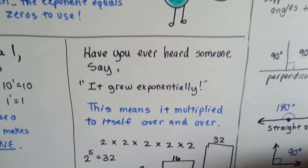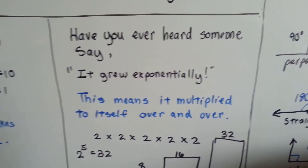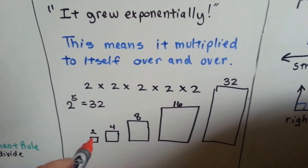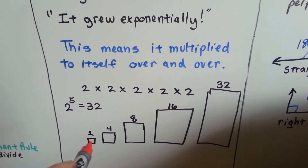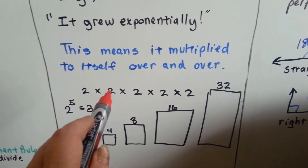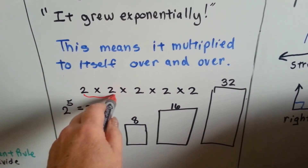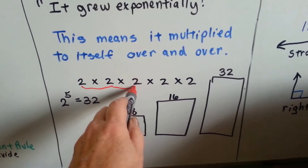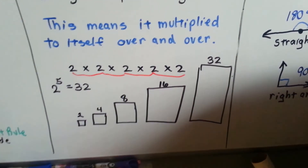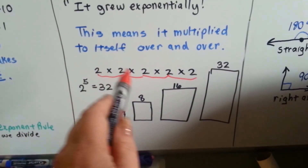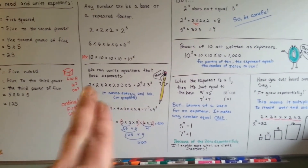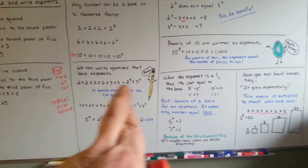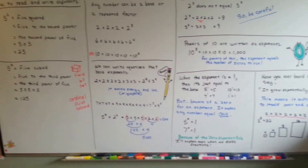Have you ever heard someone say 'it grew exponentially'? That means it multiplied to itself over and over. If this were a virus or bacteria and it grew exponentially: it starts at 2, becomes 2 times 2 which is 4, then 4 times 2 which is 8, then 8 times 2 which is 16, then 16 times 2 which is 32. That's 2 to the 5th power equal to 32. Scientists like it because they can just write 2 to the 4th power instead of writing out a bunch of multiplication.